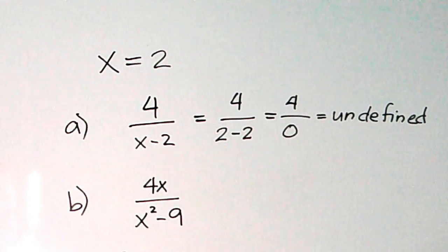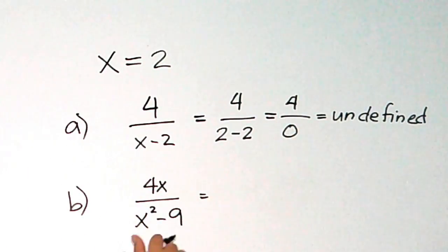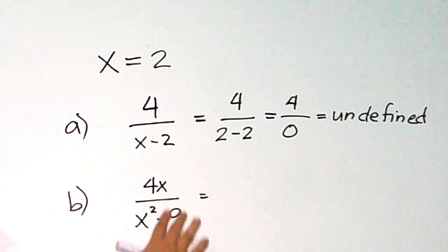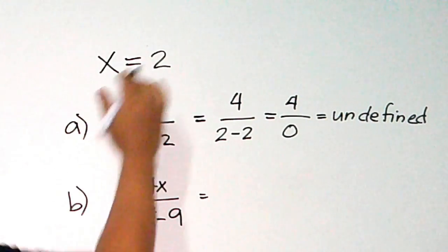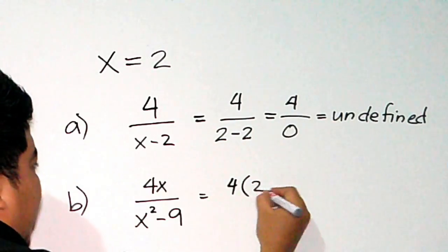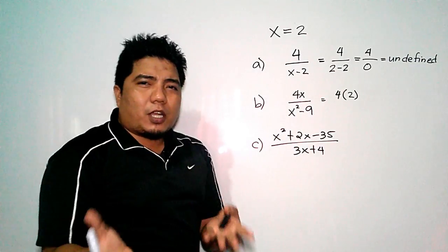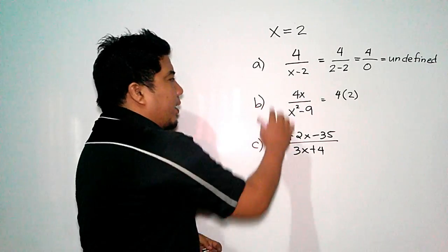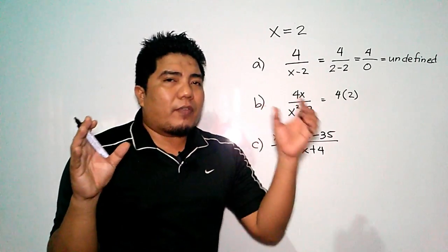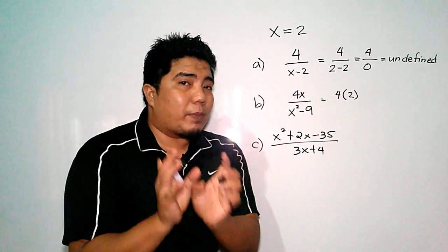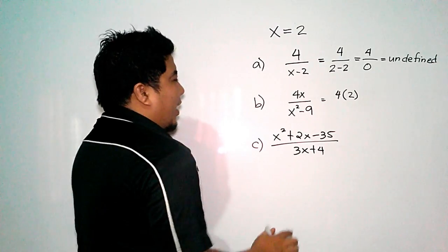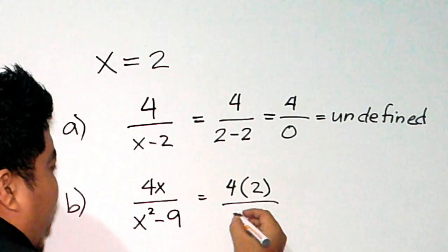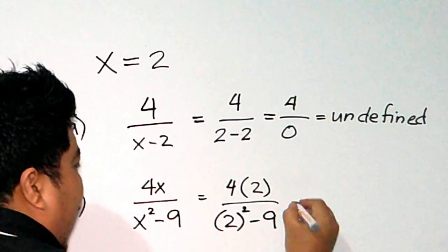Next, in our second expression, we have 4x over x² minus 9. This is a polynomial over another polynomial. We replace x with 2, giving us 4 times 2. In algebra, when a constant and a variable are written side by side, it means multiplication. In the denominator, we have 2² minus 9.